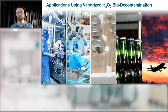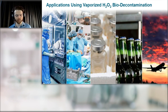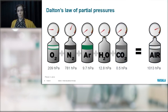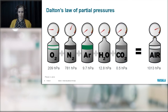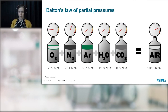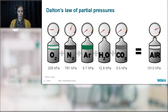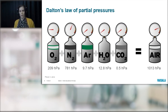Let's go through what hydrogen peroxide is and what kind of applications it's used in. There are two very important laws in chemistry that are related to vapor pressures. The first one is Dalton's law, which is true with non-reactive gases like air. Air consists of multiple different gases, and each one of them has a certain individual partial vapor pressure.